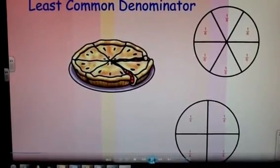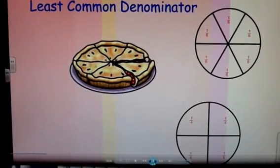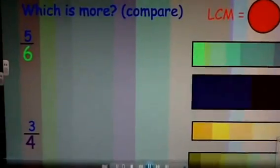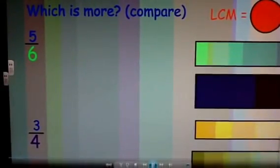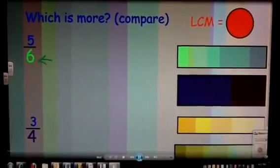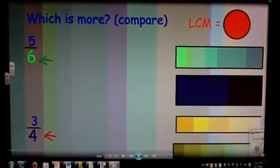A least common denominator is the least common multiple of two different denominators. So if I look back here, we have two different denominators: the six here, and of course, the four right here.